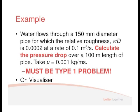Now, the key words in this thing is calculate the pressure drop, so we know from that statement that it's a type 1 problem. If it said calculate the diameter, we know it's a type 3. If it said calculate the flow rate, we know it's a type 2.